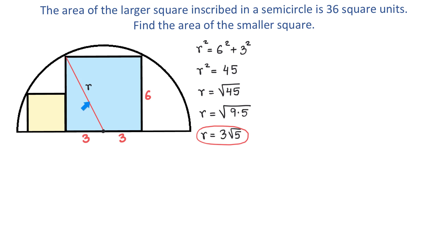So we found r, and now let's talk about this smaller square. To find the area we need to know one side of this square — let's say that this side is x. So the bottom side is x and the left side is also x. We will connect these two points to form another right triangle. In this right triangle one side is x, the other side is x plus 3, and the hypotenuse is again the radius of the circle, which is 3 square root of 5.